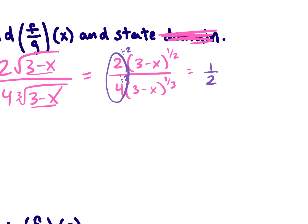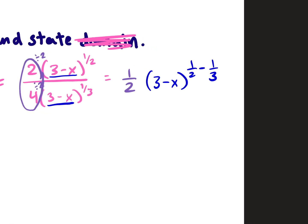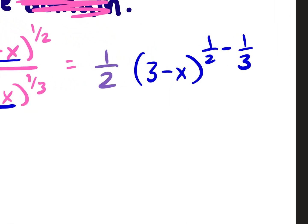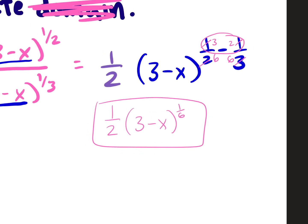For the (3 minus x) terms, since the bases are the same and we're dividing, we subtract the exponents: (3 minus x) to the 1/2 minus 1/3. Finding the common denominator of 6: 1/2 becomes 3/6 and 1/3 becomes 2/6. Subtracting gives 1/6. So the final answer is (1/2) times (3 minus x) to the 1/6 power.